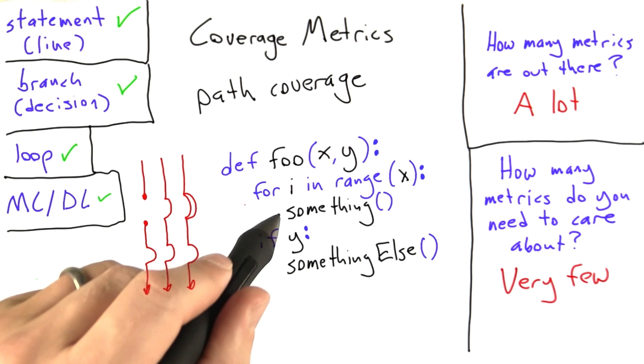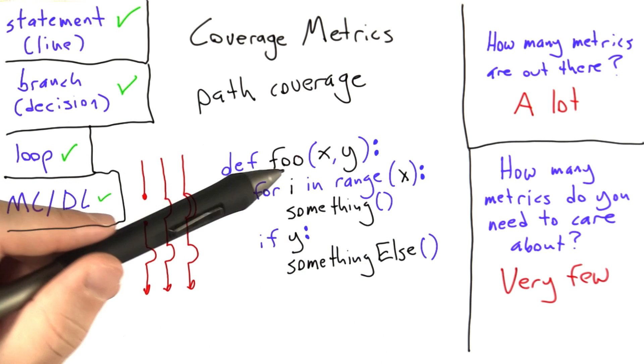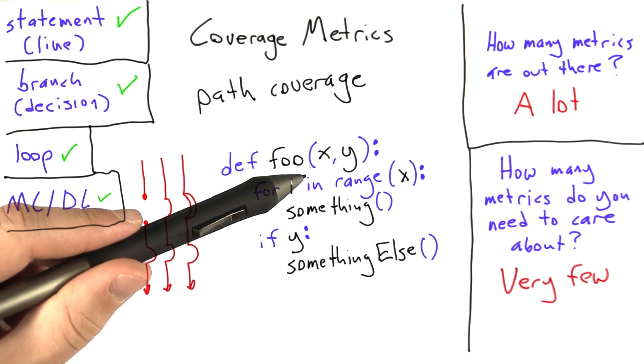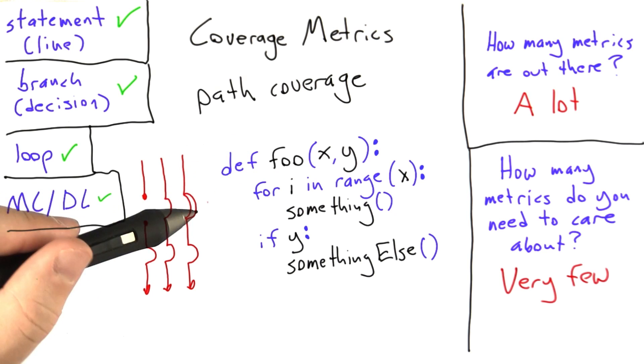And as x increases in value, we get more and more paths. One thing you might ask is, just by changing x, how many paths can we get through the code? The answer is it's unlimited.